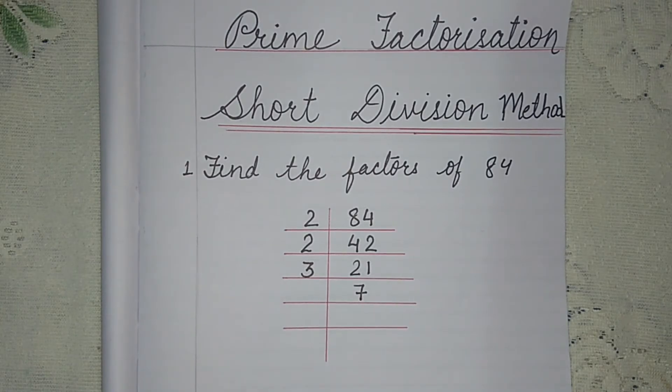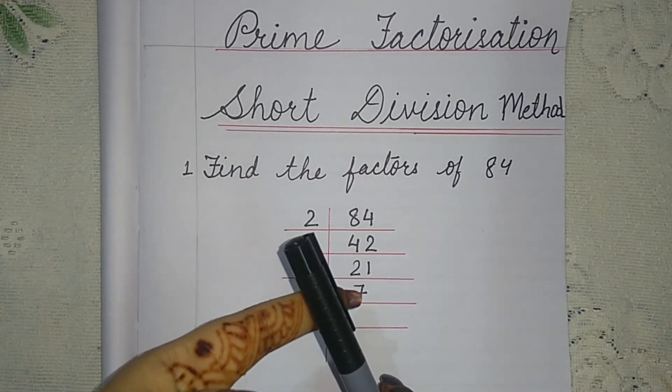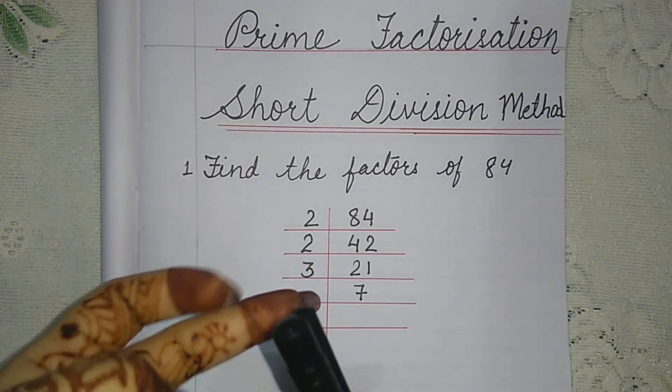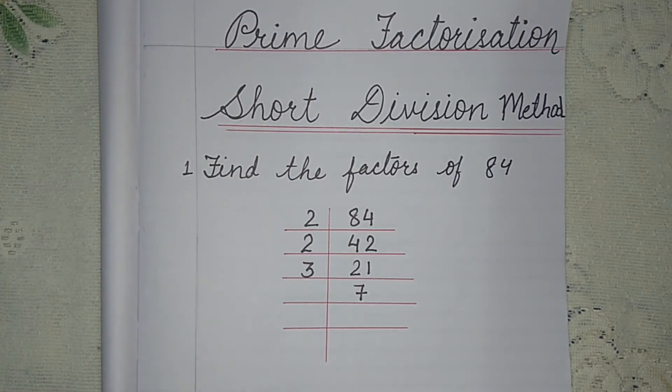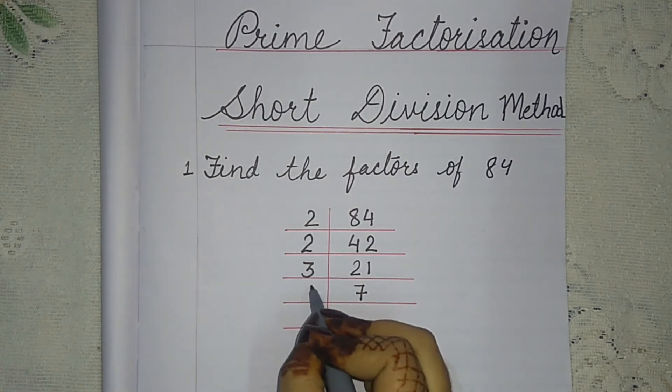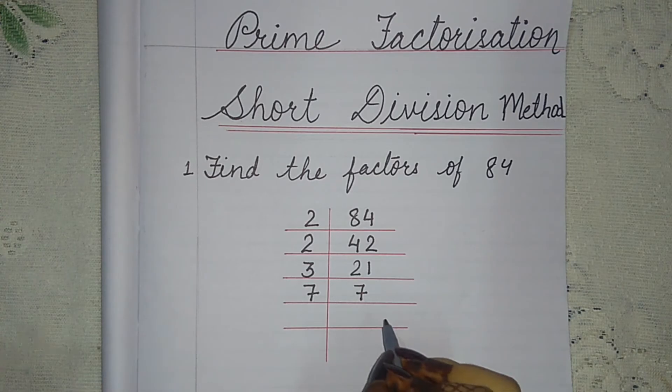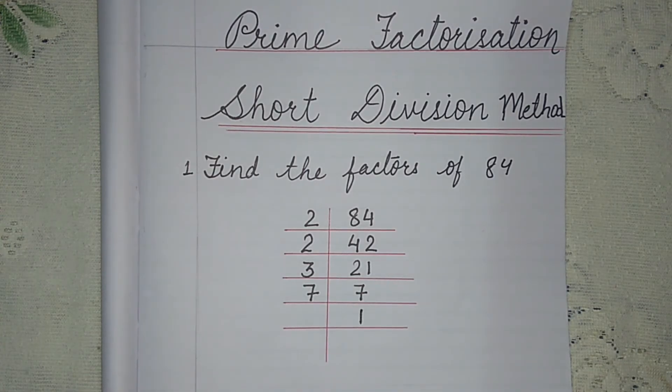Seven times, that's why we write 7. Now 7 is first of all an odd number. Secondly, 7 is a prime number. Prime number means it will be divided by 7.